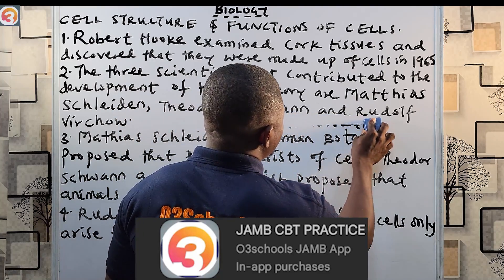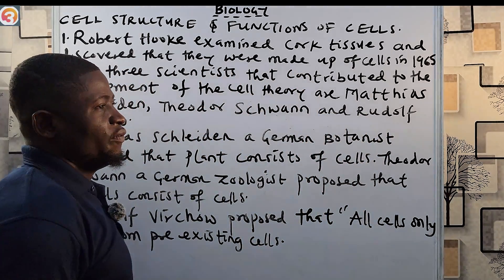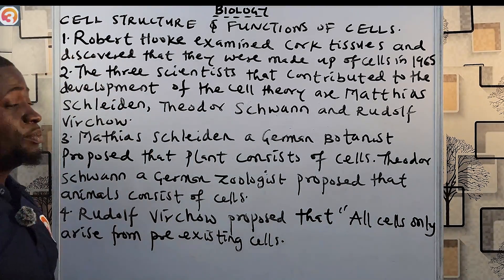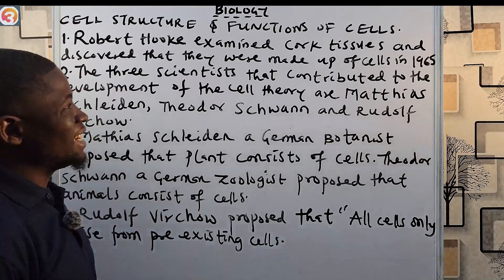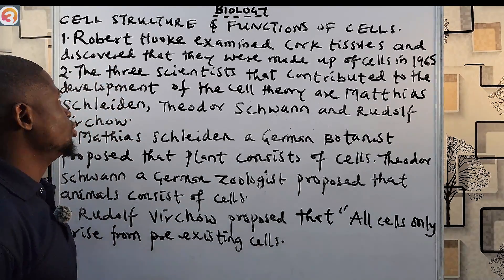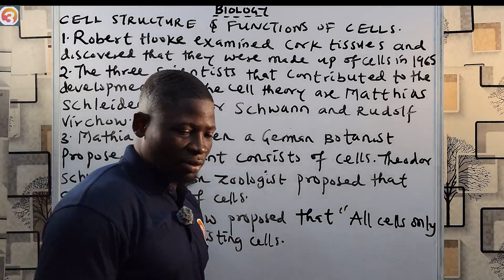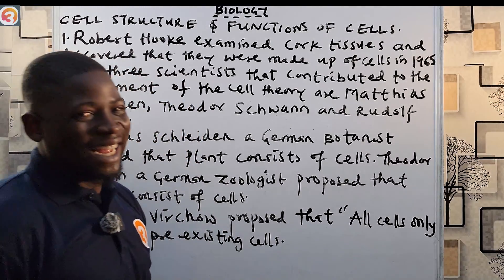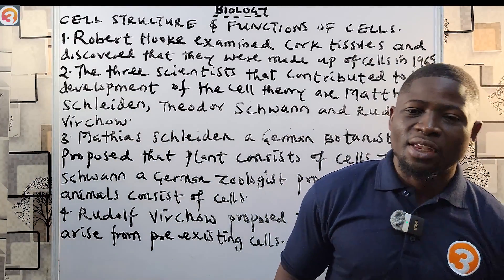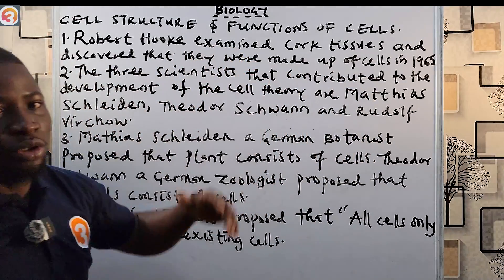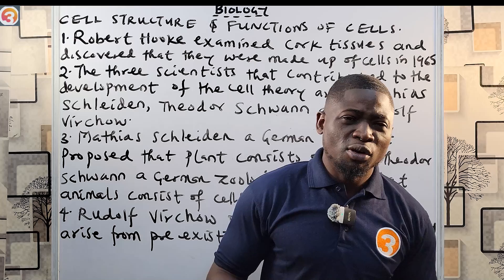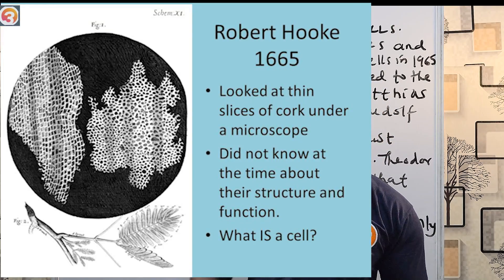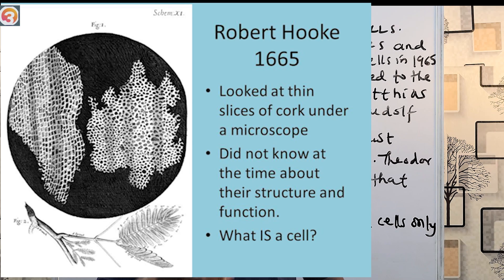Now, let's continue. Cell structure and functions of cells. Number one: Robert Hooke examined cork tissues and discovered that they were made up of cells. He discovered cells in the year 1665. What he did was examine cork tissue — cork is a part of the bark of a tree. He took thin slices of that cork and examined it using a simple magnifying device.